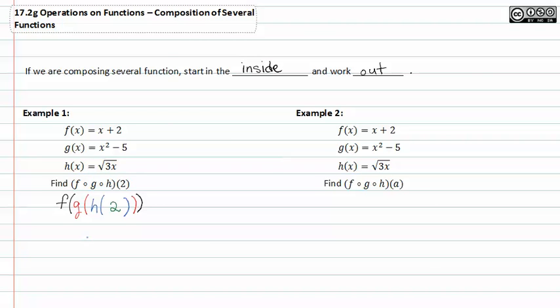h of two would be h of two, which is the square root of three times two, because in place of x we're putting two. When we simplify this, we get the square root of six.